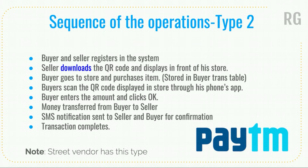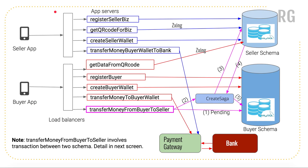Type 2 sequence: buyer and seller register in the system; the seller downloads the QR code and displays it in front of the store — the seller can also receive it via email. The buyer goes to the store, purchases an item, scans the QR code displayed in the store through his phone app, enters the amount and clicks OK, and money is transferred. The confirmation here is via SMS notification sent to both seller and buyer. This is a common practice for street vendors and cab drivers, where Paytm predominantly handles such transactions.